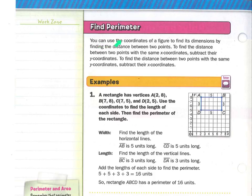You can use the coordinates of a figure to find its dimensions by finding the distance between two points. To find the distance between two points with the same x-coordinates, subtract their y-coordinates. To find the distance between two points with the same y-coordinates, subtract their x-coordinates. We'll do some examples that will make this make a little bit more sense.